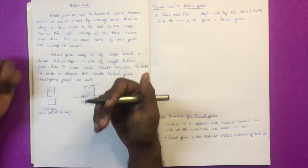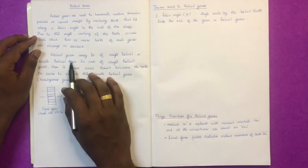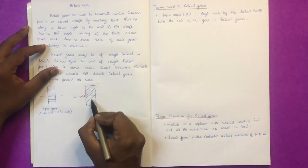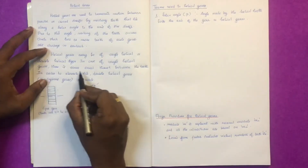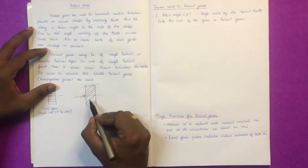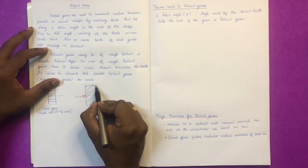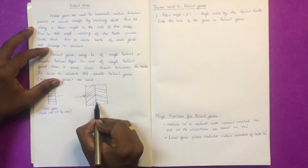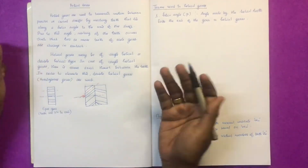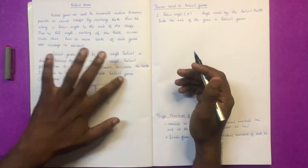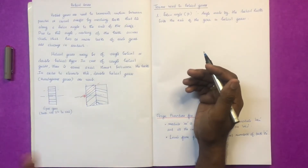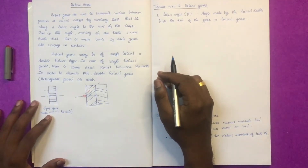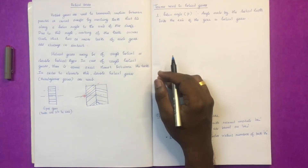Helical gears can be either single helical or double helical. In the case of single helical gears, there is an axial thrust force. To eliminate this axial thrust, double helical gears — also called herringbone gears — are used. That is the key difference between single helical and double helical gears.